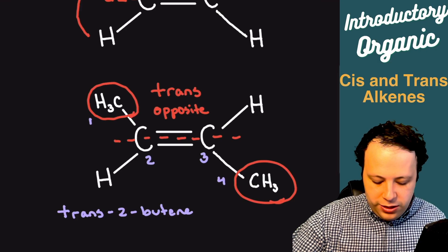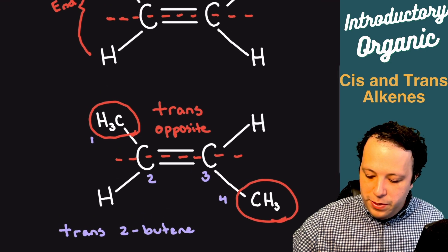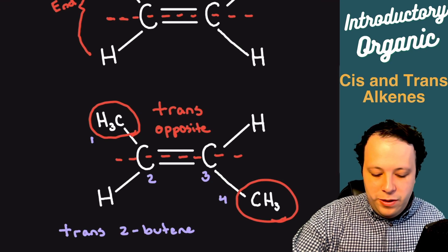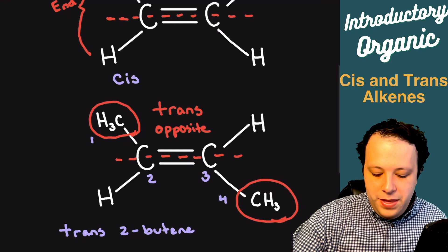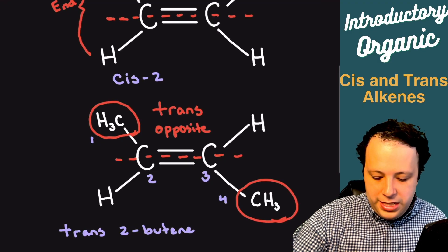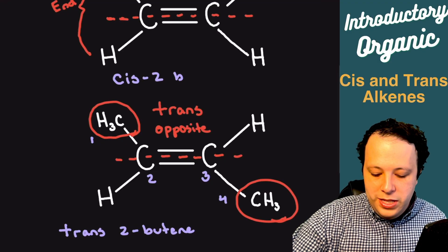For the next one, you might be able to guess it — if the other one is trans, this one would be cis-2-butene for the name. Each one specifies its particular geometry.